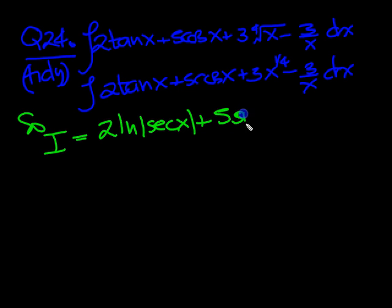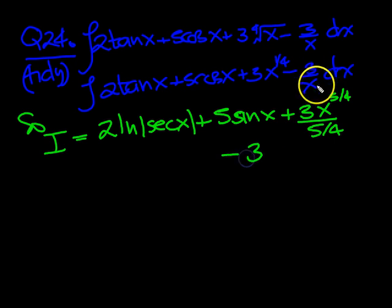So it's 2 lots of log of modulus sec x plus the integral of cos is sine, so it's 5 lots of sine x plus 3 x to the, add 1 to a quarter, you get 5 quarters, over the 5 quarters, minus 3 lots of, 1 over x integrates to log x modulus, plus a k at the end.